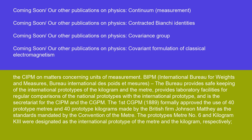The BIPM (International Bureau for Weights and Measures) provides safekeeping of the international prototypes of the kilogram and the meter, provides laboratory facilities for regular comparisons of the national prototypes with the international prototype, and is the secretariat for the CIPM and the CGPM.